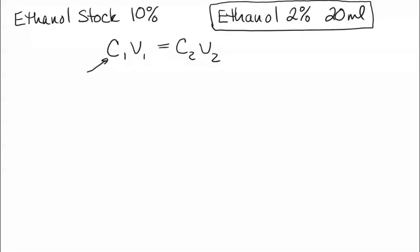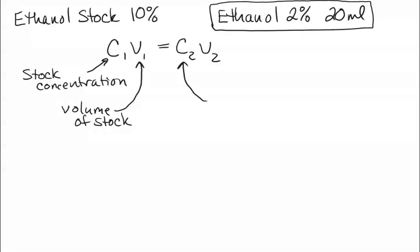What this essentially is saying is if you multiply your stock concentration times the volume of your stock, it's going to equal the concentration of the solution you want to make multiplied by how much of that new solution you want to make.